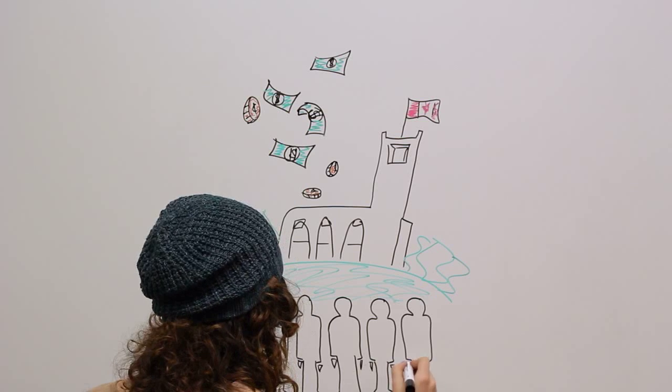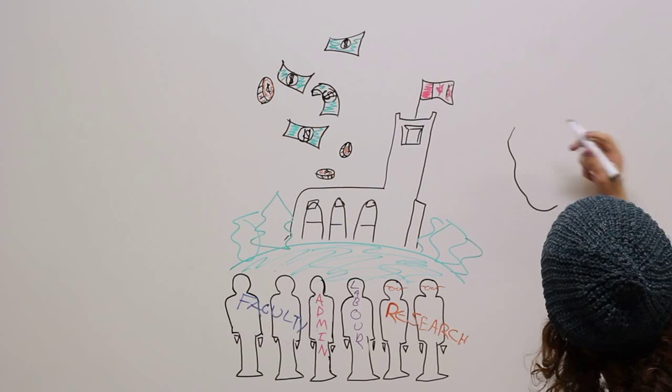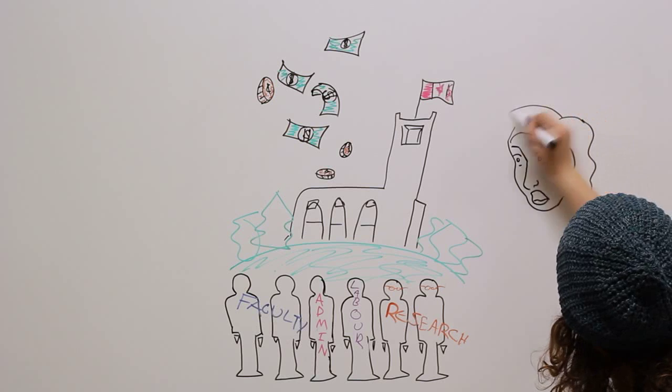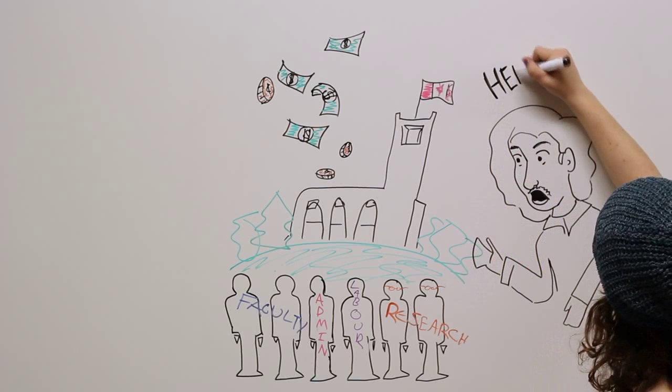We have members of the government at the table, faculty members, university administrators, researchers. There are a lot of people who have a lot of opinions on what kinds of changes need to happen at our schools. With so many people weighing in, it's not difficult for the opinions of students to get lost in the shuffle.